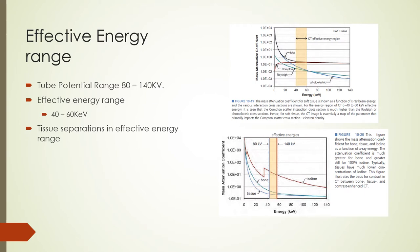The mass attenuation coefficients of Compton and photoelectric interactions are well separated in this region for soft tissues. The lower curve shows the mass attenuation coefficients of various tissues, showing the separation between iodine, bone, and soft tissues at the effective energy range. Some vendors offer 90 to 130 kV tube potential, so effective energy will be slightly different. The differences in mass and linear attenuation coefficients of tissues is what makes CT imaging possible and is unique to the CT modality.